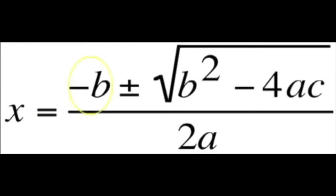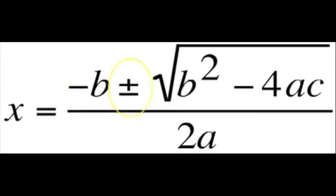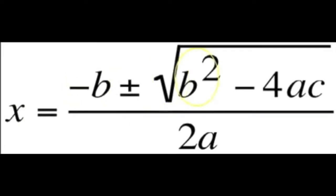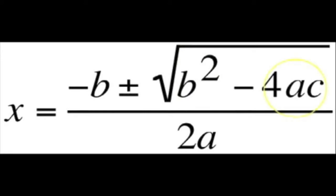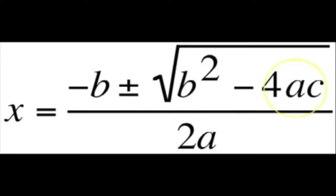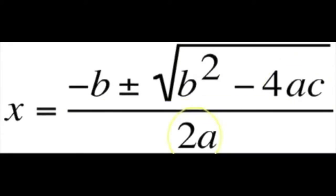x equals negative b plus or minus the square root of b squared minus 4ac. And divide all of that by 2a.